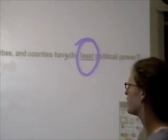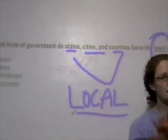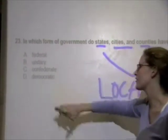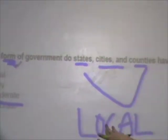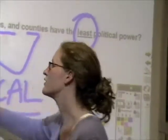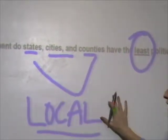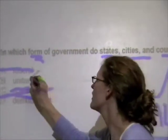In which form of government do states, cities, and counties have the least political power? When I see states, cities, and counties, I'm thinking local — not the central government. Our choices are federal, unitary, confederate, and democratic. Democratic is not a form of government — that's a type. Federal is when the central and local share power. Unitary is when the central has the power. Confederate is when the local has the power. This question says local has the least amount of power, so confederate is out. Federal is out because we're not sharing power. It's unitary.